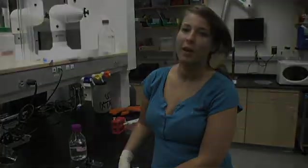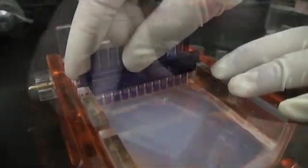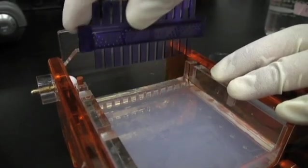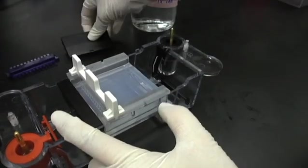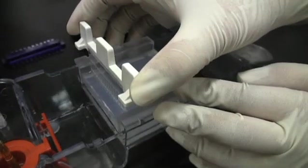So our gels are solidified. So we're going to start by removing the gel, rotate it 90 degrees, and then take the comb out, and for this one, take the weights out from the side, and then rock the comb out gently.